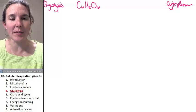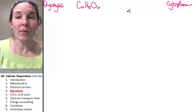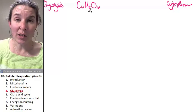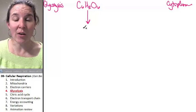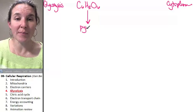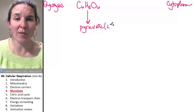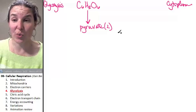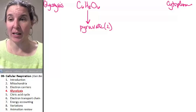Glycolysis is basically taking a molecule of glucose and breaking it down into a molecule called pyruvate. We actually get two pyruvate molecules out of this process.